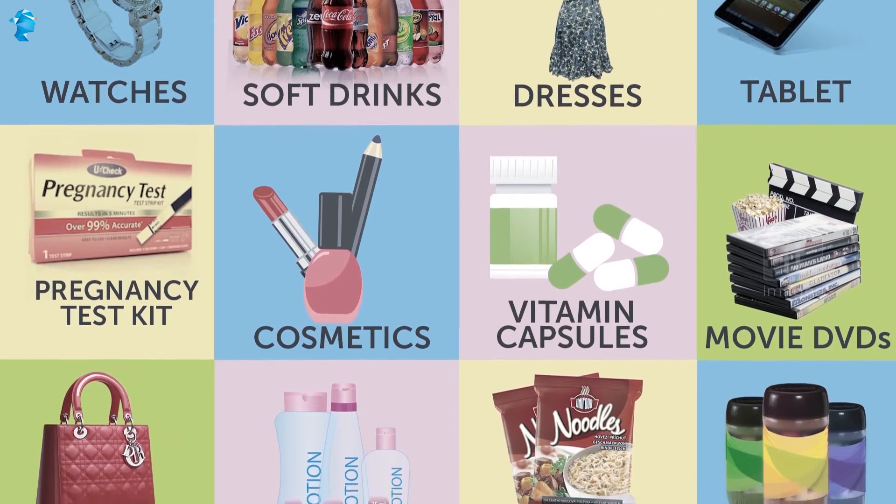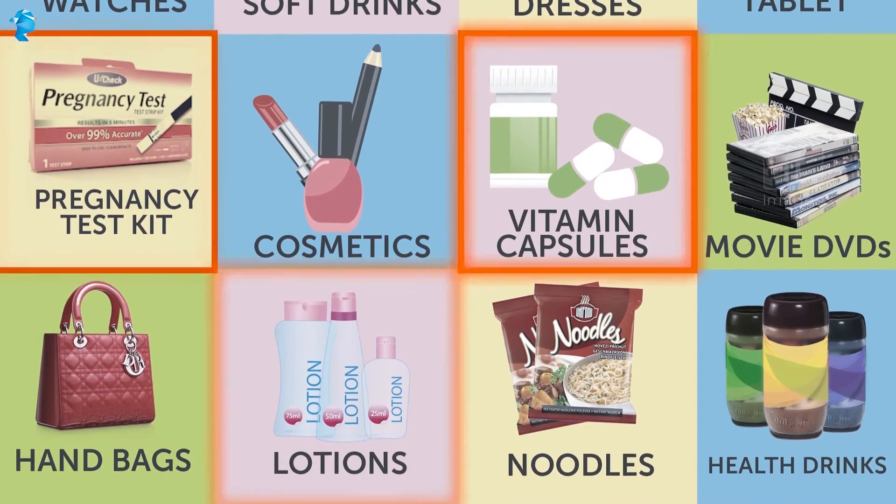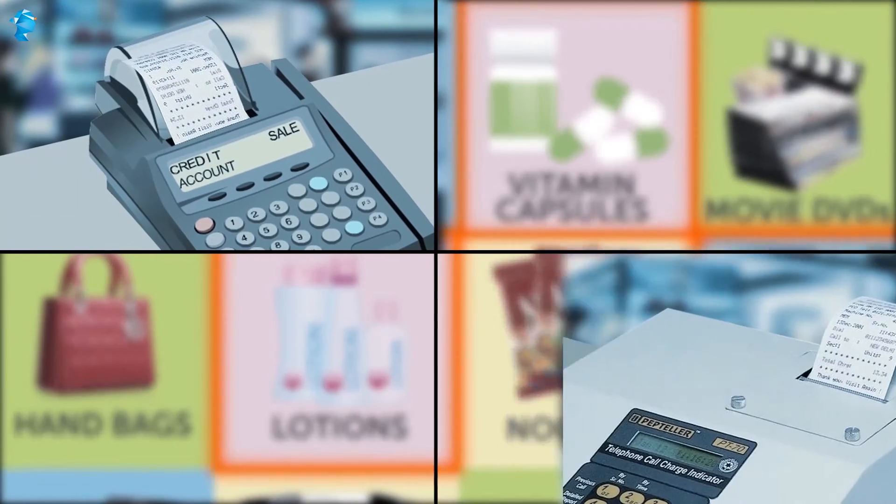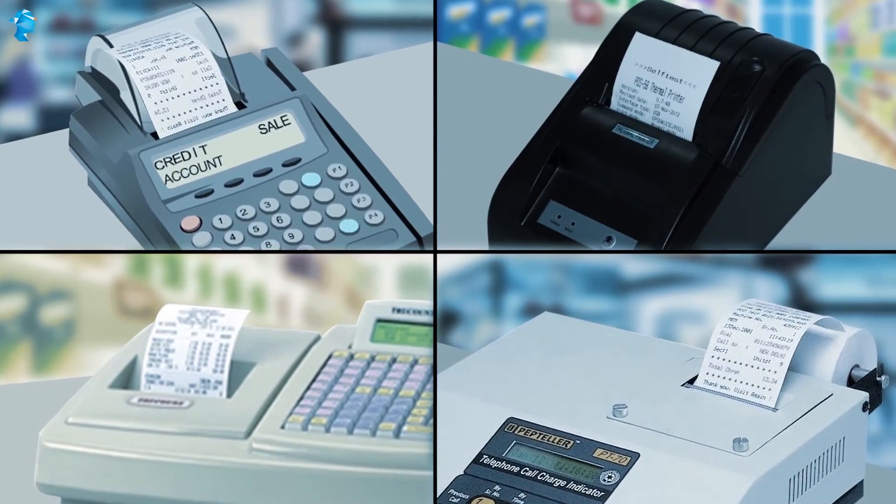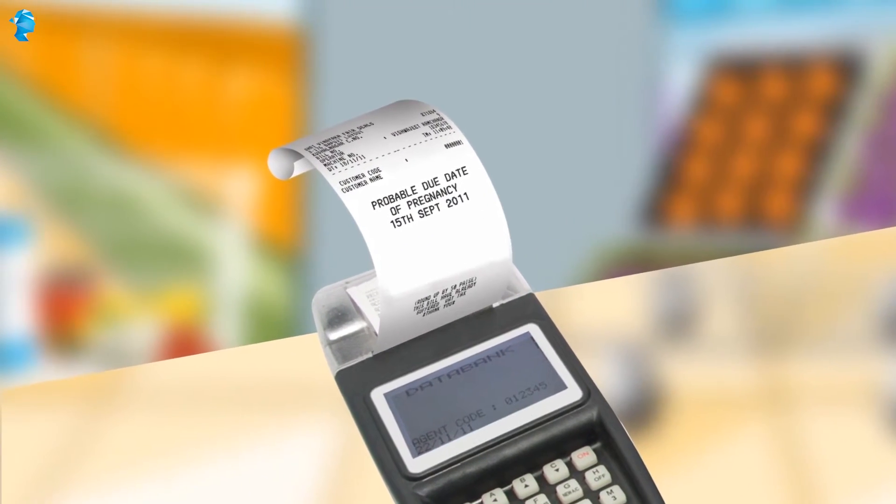So extrapolating this information, Target's analysts were able to identify certain products. Their purchase details could lead Target to approximately predict pregnancy due dates for their customers.